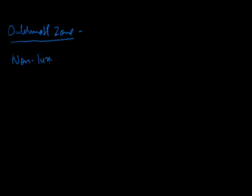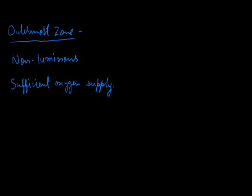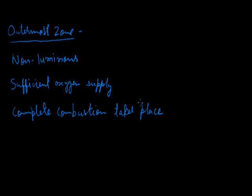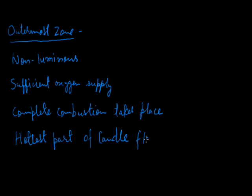The first is the outermost zone of candle flame. It is non-luminous in nature. There is sufficient oxygen supply, and here complete combustion takes place. As there is complete combustion, it is the hottest part of the candle flame. This zone is faintly visible and blue in color.